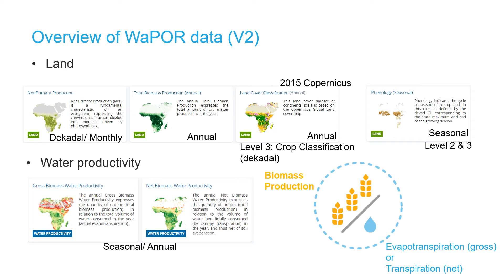The water productivity layers consist of both net and gross water productivity layers, which is calculated by dividing the biomass production over transpiration or evapotranspiration, either at annual timescales for level 1, or seasonal timescales based on the phenology for level 2 and 3. Additional datasets are available that detail the quality of the NDVI and LST layers.